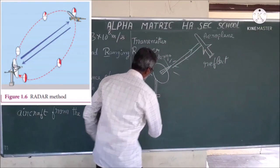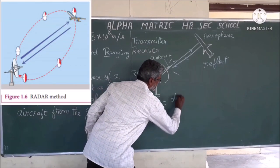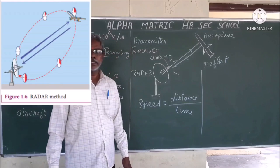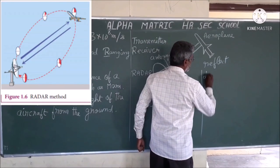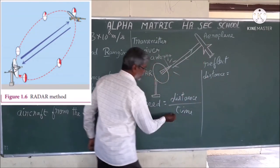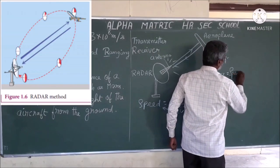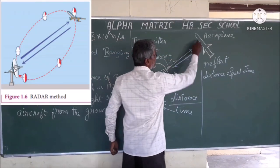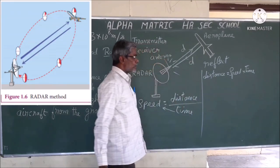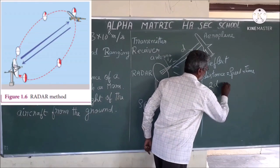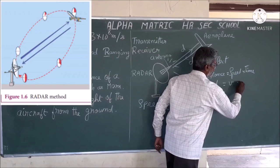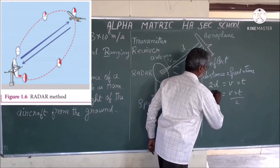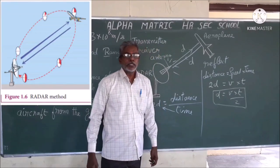We know the formula: speed is equal to distance divided by time. So distance is equal to speed multiplied by time. Let us consider the one-way distance as D, so the total distance traveled by the signal is 2D. Therefore, 2D = V × T, which gives us D = V × T / 2. With this formula, we can calculate the distance.